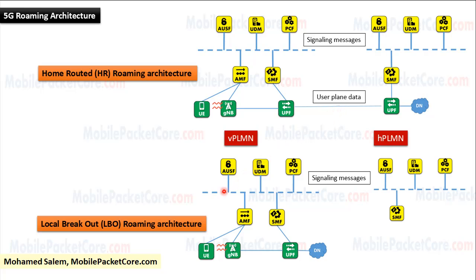While in Local Breakout roaming architecture, the UE in the visited network connects to the gNB in the visited PLMN, then to the UPF in the visited PLMN, and then finally to the data network that exists in the visited PLMN.